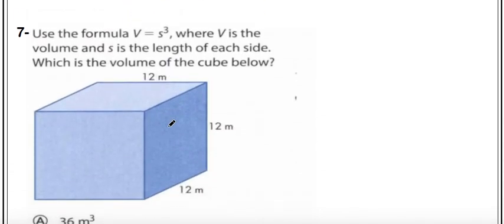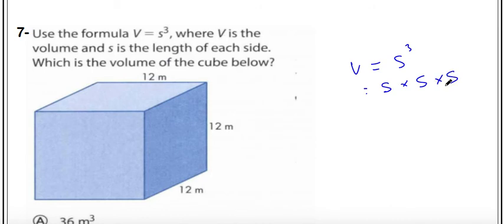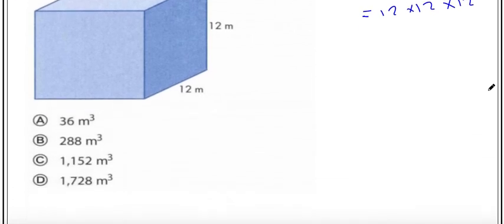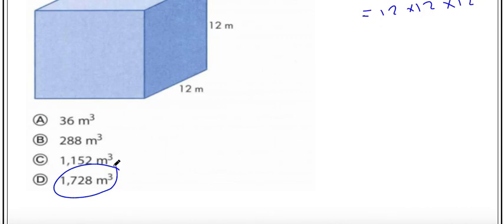Next: use the formula v equals s cubed, where v is volume and s is side length. The side length s equals 12, so v equals 12 times 12 times 12. The answer is 1728.